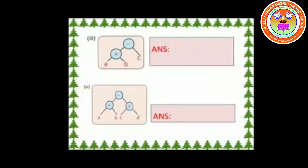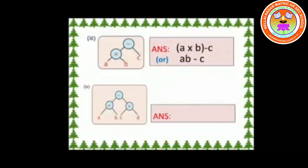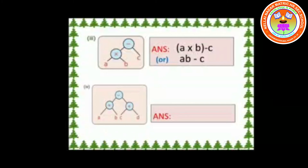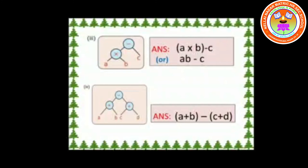Third one: from the bottom we get A × B, then the node is minus, so the answer is AB − C. Fourth one: from the left branch we get A + B, and from the right side we get C + D. Here the node is minus, thus the answer is (A + B) − (C + D).